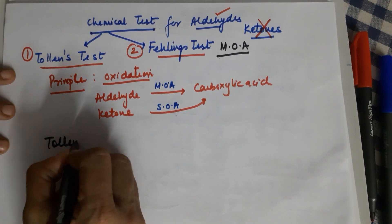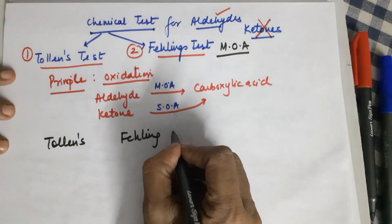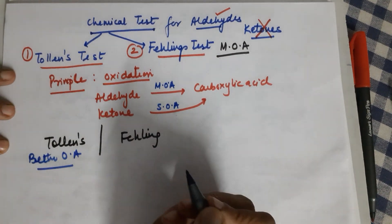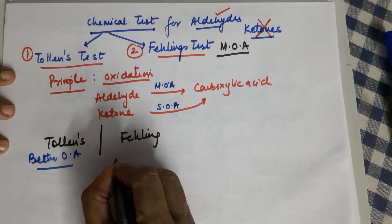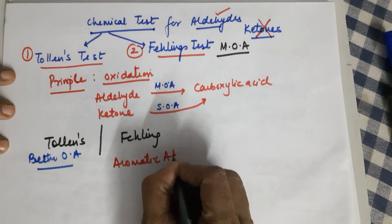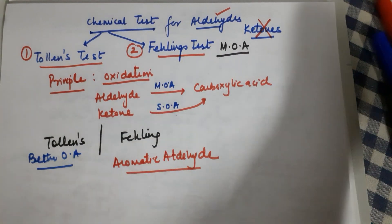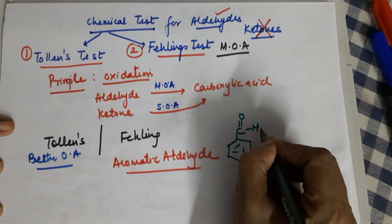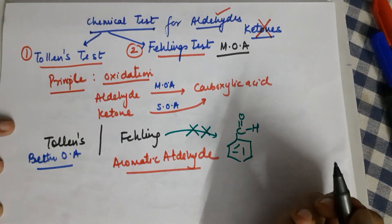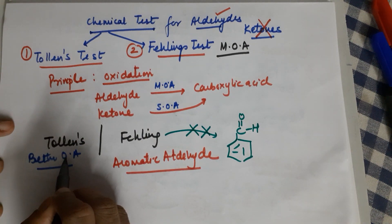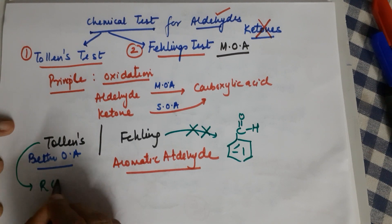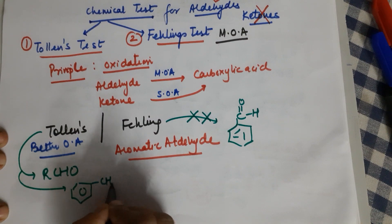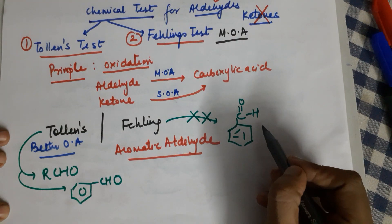Comparing Tollens and Fehling reagent: Tollens reagent is a better oxidizing agent than Fehling. This is also the reason why for aromatic aldehydes — that is, a benzene ring attached directly to an aldehyde group — you cannot use the Fehling test because it is a milder oxidizing agent. For Tollens you can use it for aliphatic aldehydes (RCHO) as well as for aromatic aldehydes like benzaldehyde, whereas Fehling solution cannot be used for benzaldehyde.